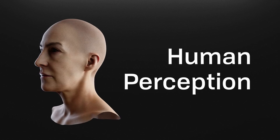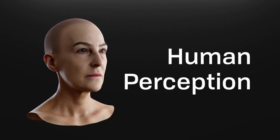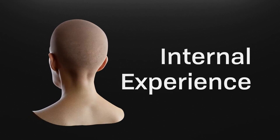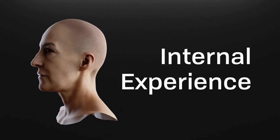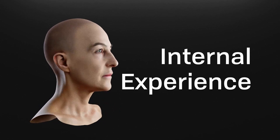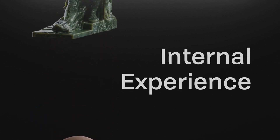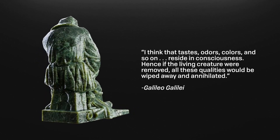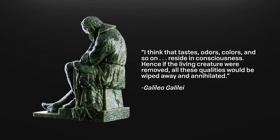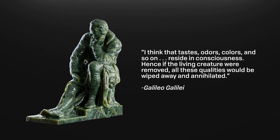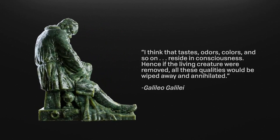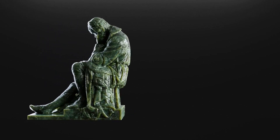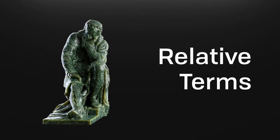We process things in our own individual ways. Some people actually believe color is strictly an internal experience, meaning it's part of our human experience and might not even exist outside of perception. As Galileo put it, 'I think that tastes, odors, colors, and so on reside in the consciousness. Hence, if the living creature were removed, all these qualities would be wiped away and annihilated.' This can open the door to get us thinking about color and light in relative terms — meaning they're not absolute.